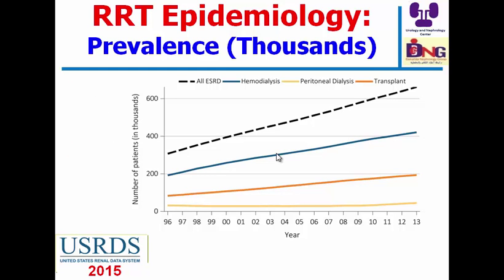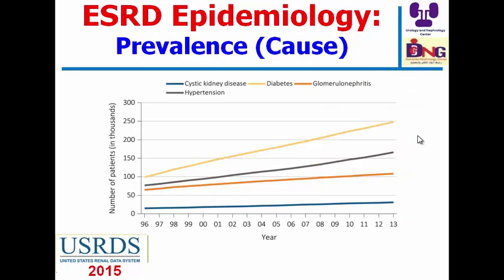According to the last report of the USRDS that was published at the end of 2015, the prevalence of end-stage renal disease and its treatments is increasing through the years. The blue line reflects the number of patients treated with dialysis — in 1996 it was 200,000 and currently it is above 400,000. This means we are in urgent need for vascular access for the majority of patients suffering from end-stage renal disease.